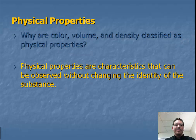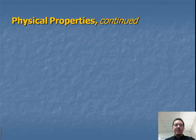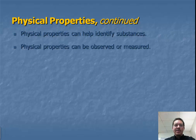Our first question. Physical properties are characteristics that can be observed without changing the identity of a substance. Physical properties can help identify a substance. Physical properties can be observed or measured.